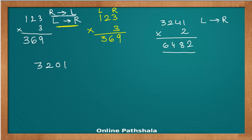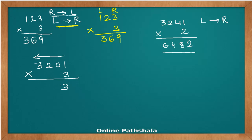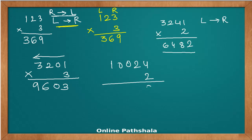One more: 3201 multiplied by 3. Using right-to-left this time: three times one is three, three times zero is zero, three times two is six, and three times three is nine — giving 9603. Another example: 10024 multiplied by 2. Two times four is eight, two times two is four, two times zero gives two zeros, and two times one is two — giving 20048.